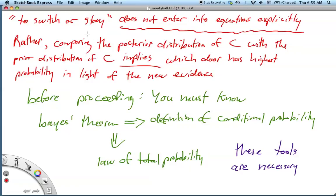To rephrase that, to switch or to stay does not enter into the equations explicitly. So forget about it for now. Rather comparing the posterior distribution of C with the prior distribution of C where the car is implies which door has the highest probability in light of our new evidence.